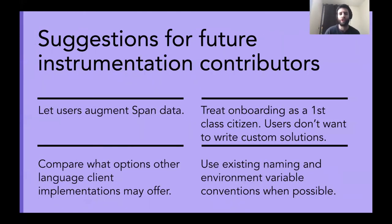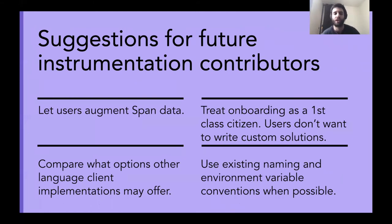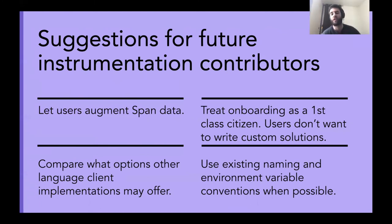Those are just a few examples of areas where client configuration — which lets users augment their span data — can help onboarding tremendously. For future contributors who want to add or contribute instrumentation, some lessons to think about: first, treat onboarding as a first-class citizen. Users don't want to write glue code — they want to use officially supported configuration options when available. Let users augment their span data; we're not going to know ahead of time every single piece of metadata to set as a span attribute, but if you give them an easy, happy path to augment that data themselves, that can be just as good, if not better.